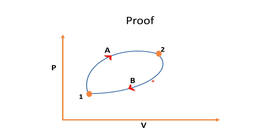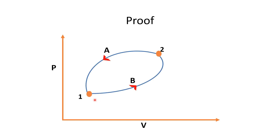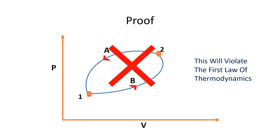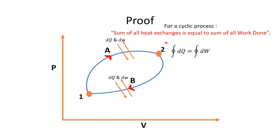This forms a complete cyclic process — we go from state 1 to state 2 with path A and return from state 2 to state 1 with path B. An important point: you cannot go from state 1 to state 2 via path B and return via path A — that would violate the first law of thermodynamics. For a cyclic process, the sum of all heat exchange equals the sum of all work done: ∮dQ = ∮dW.